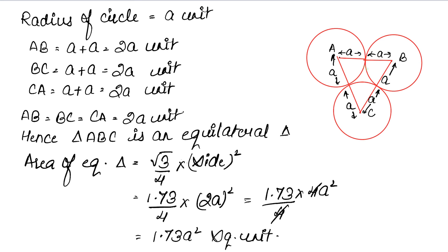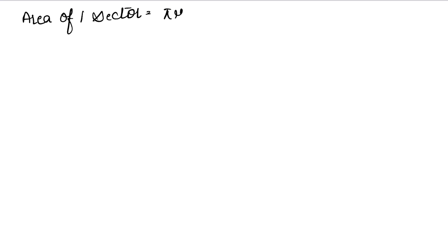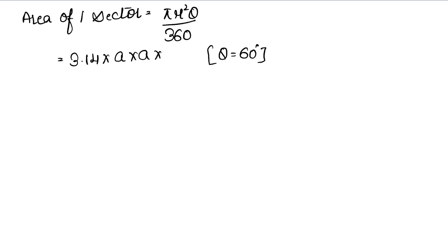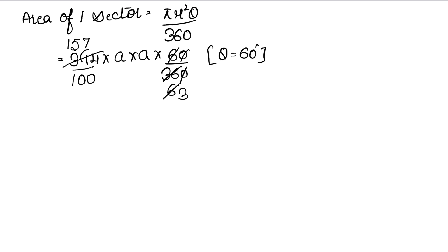Now to find the shaded area, we need to find the area of the sectors of the circles. The formula for area of one sector is pi * r² * theta / 360. Pi is given as 3.14, r = a, so r² = a². Theta will be 60 degrees because in an equilateral triangle all angles are 60 degrees. So we get 3.14 × a² × 60/360. Simplifying 60/360 = 1/6, this gives us 157/300 * a² square units for one sector.